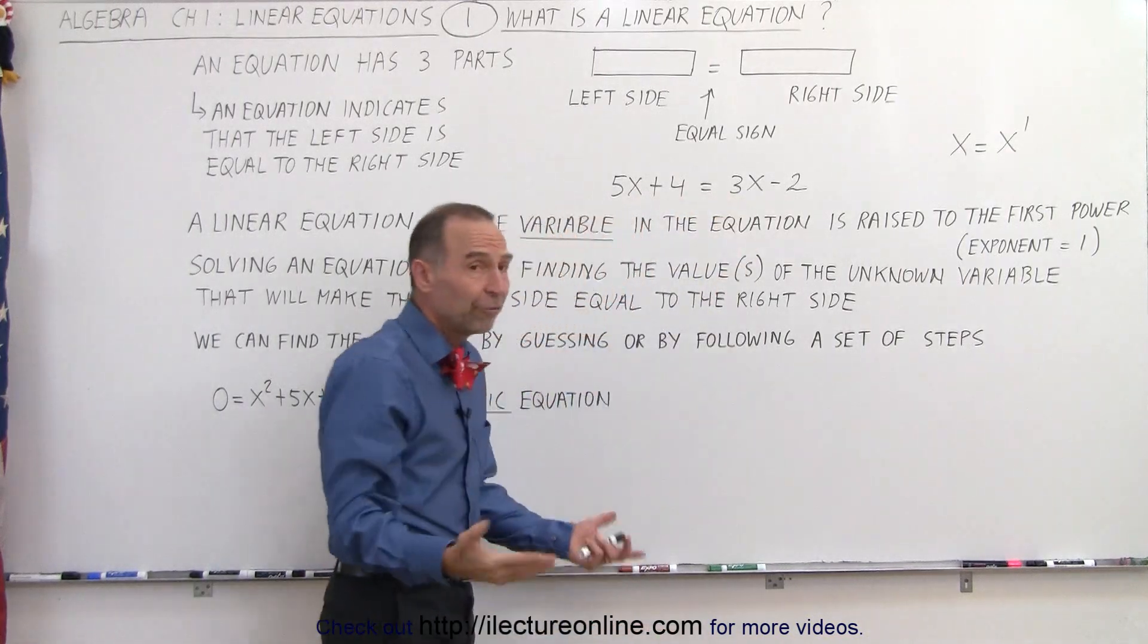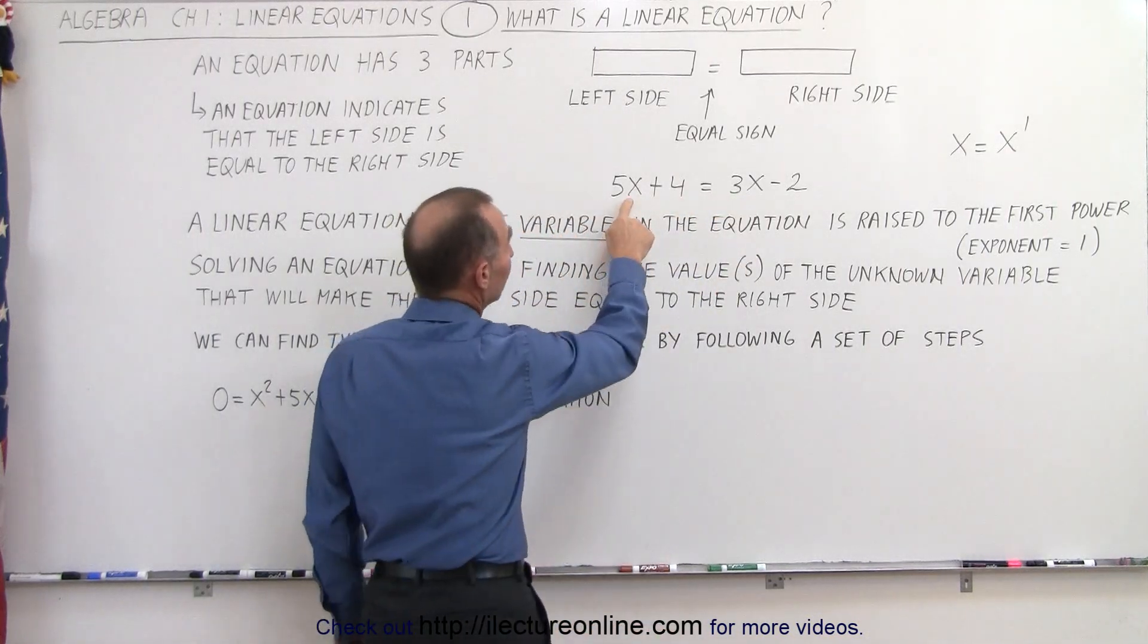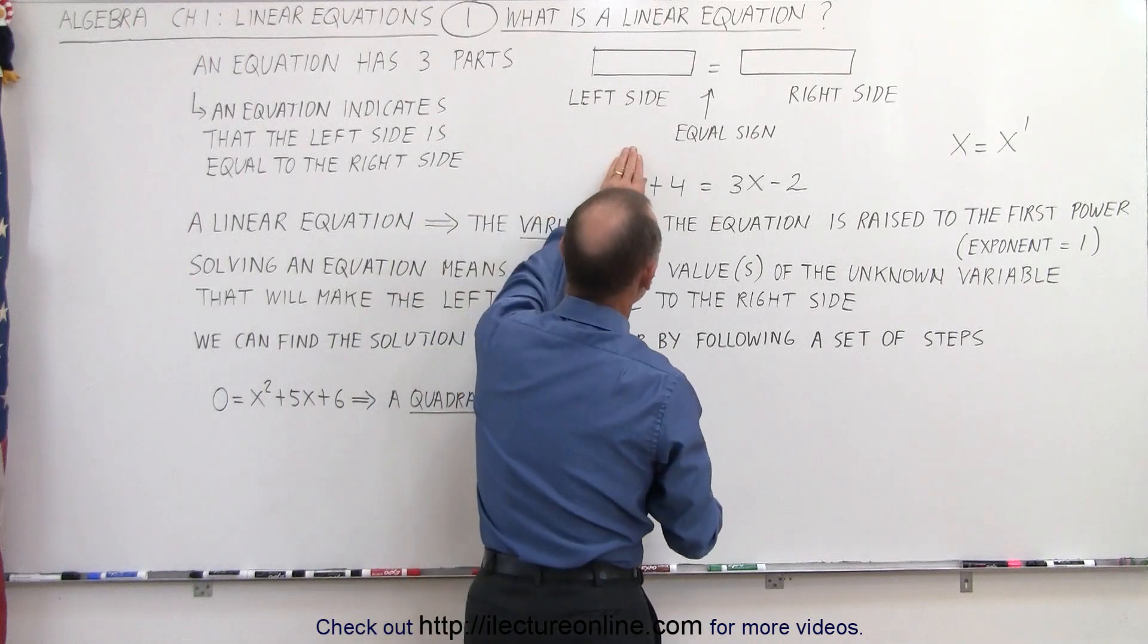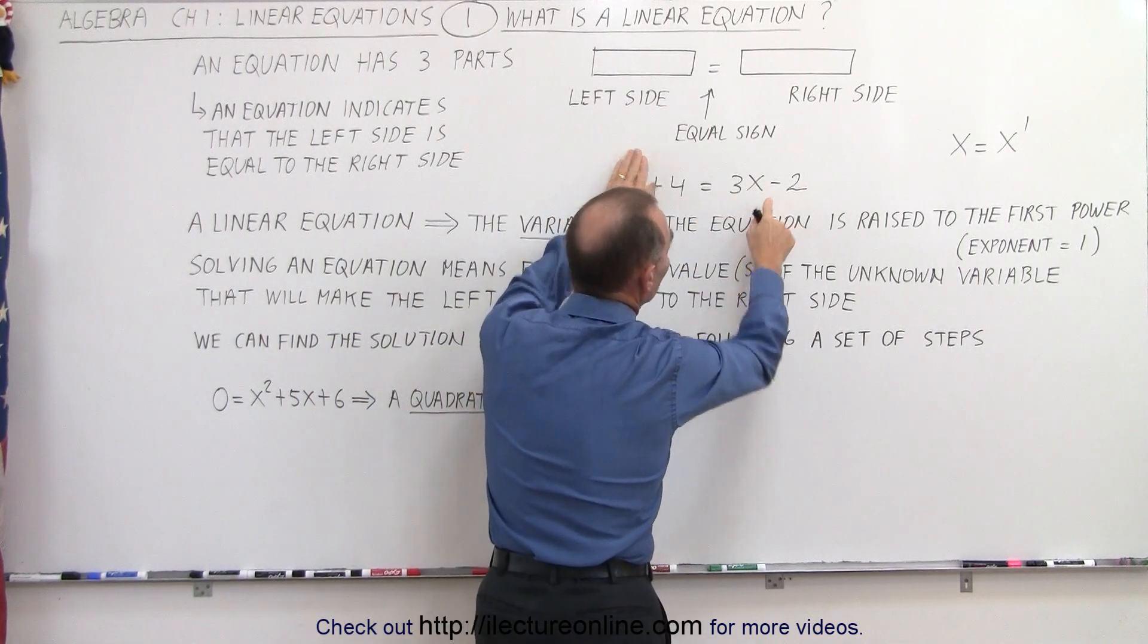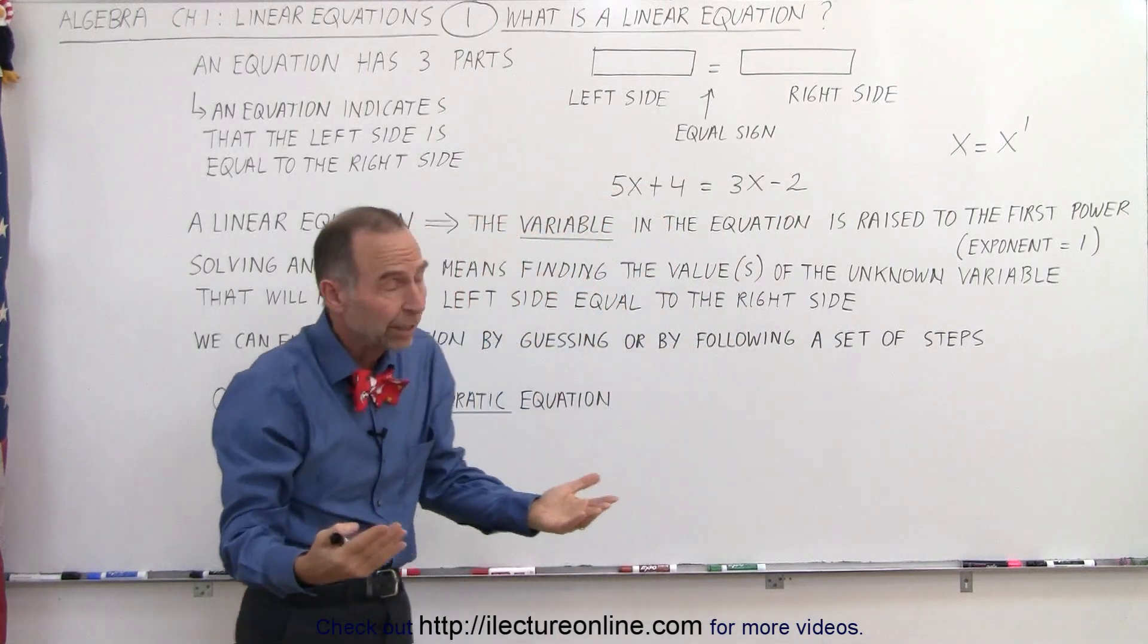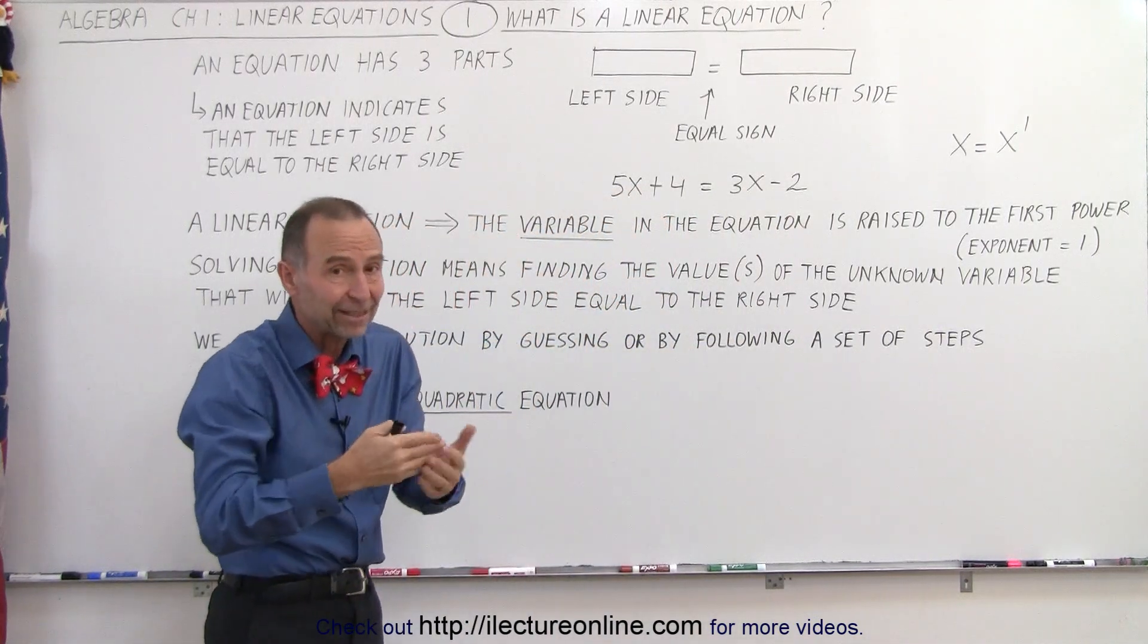For example, if we let x equal 0, then of course this term goes away, and this term goes away. Then we have 4 equals negative 2, which of course we know is not true, and therefore we realize that x cannot be 0.